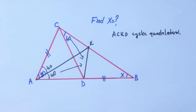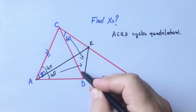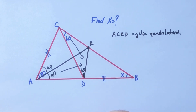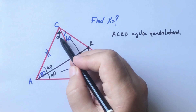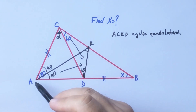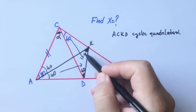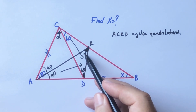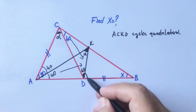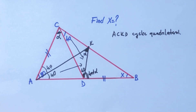That means ACKT is a cyclic quadrilateral. If here is 40 degrees, this angle must also be 40 degrees. Let's call this angle alpha — this angle must also be alpha, because there are equal lengths opposite the alphas.